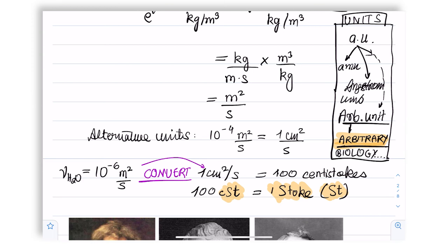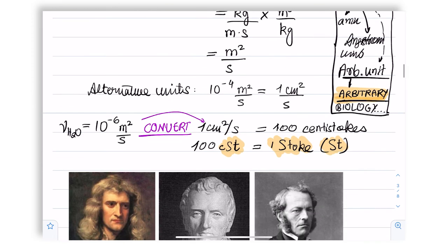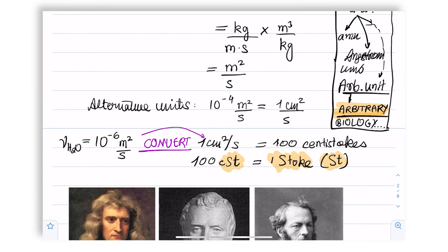Remember, when we're going from meter squared to centimeter squared, we will multiply. So meter squared to centimeter squared is 10 to the power 4, plus 4. So we end up with 10 to the power minus 6 plus 4 centimeter squared per second.